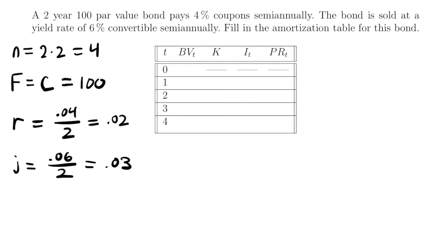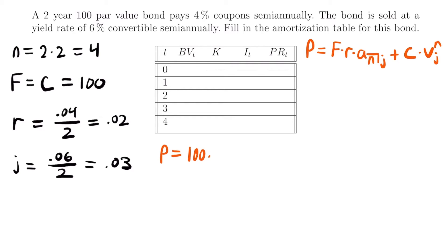Now we have everything we need. The formula for the price of a bond is: P equals the face value times R (the coupon rate) times the present value of an annuity-immediate with N payments at yield rate J, plus the redemption value times the present value factor to the power of N using yield rate J. Plugging in our values: P equals 100 times 0.02 times a-angle-4 at J equals 0.03, plus 100 times the present value factor to the power of 4 at 0.03.